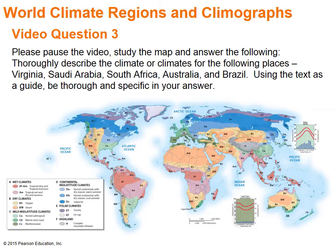Please pause the video, study the map, and answer the following: What is the climate or climates for the following places — Virginia, Saudi Arabia, South Africa, Australia, and Brazil? Using the text as a guide, be thorough and specific in your answer.